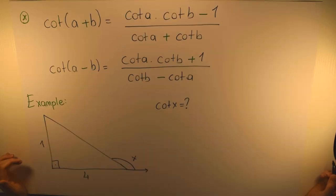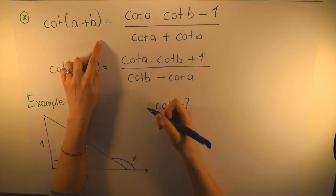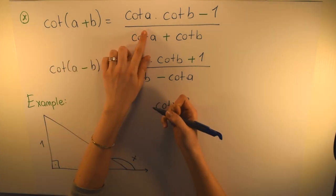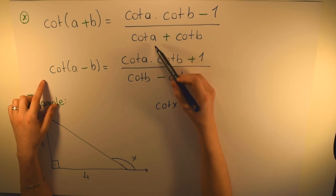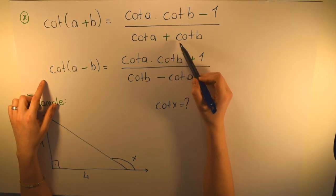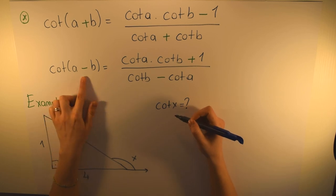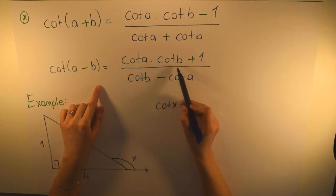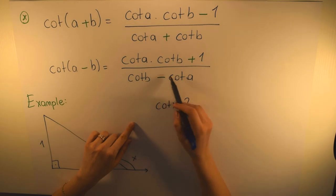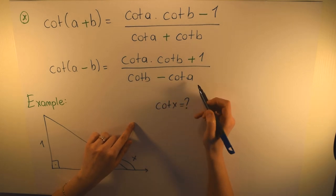Now let's look at the formulas for cotangent. Cotangent(a+b) = (cotangent a · cotangent b − 1) / (cotangent a + cotangent b), and cotangent(a−b) = (cotangent a · cotangent b + 1) / (cotangent b − cotangent a).